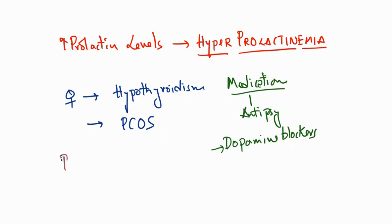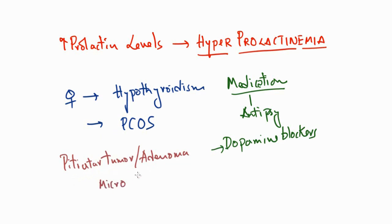Another significant cause is a pituitary tumor, also called a pituitary adenoma. Based on size, it can be a micro adenoma or a macro adenoma. These are the main scenarios associated with increased prolactin levels.